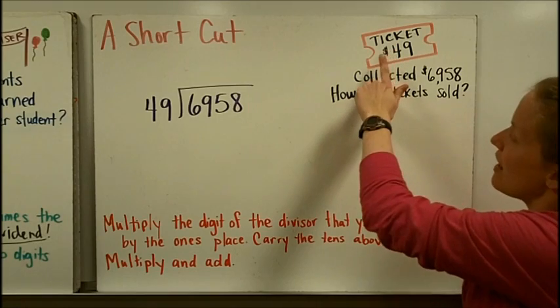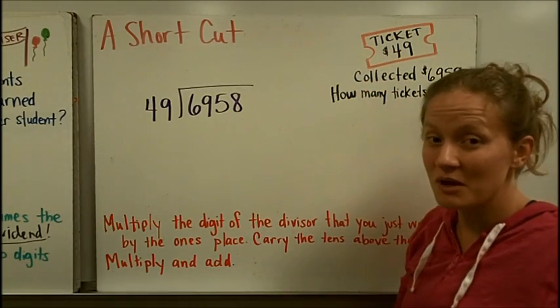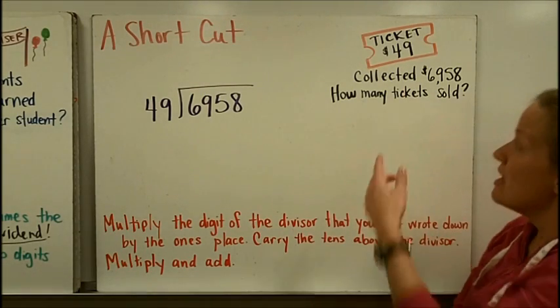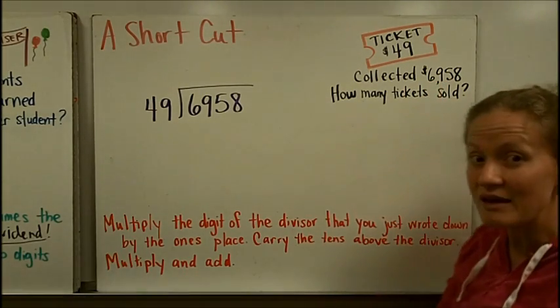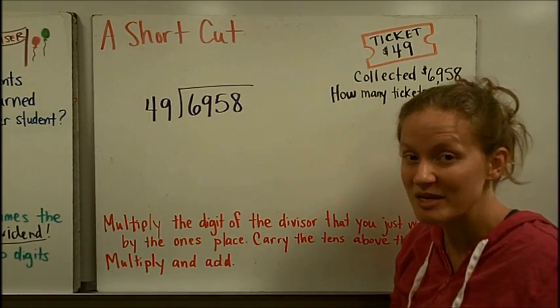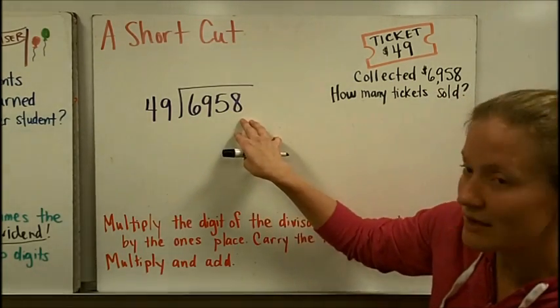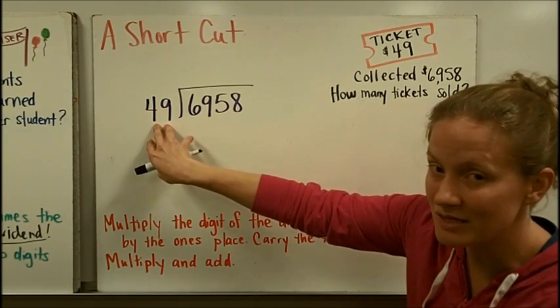Here's our story. We have a ticket to a concert that costs $49, and the box office, the people who collect the money, end the night with $6,958. And they want to figure out how many tickets did we sell. So we can do that by dividing the total that they collected by the price of the ticket, $49.